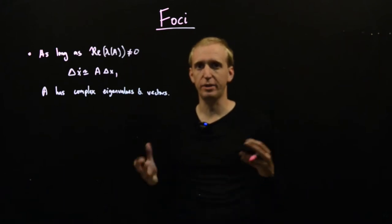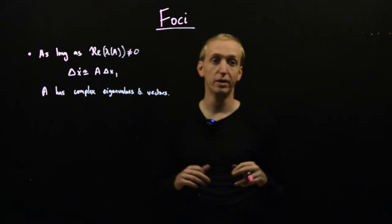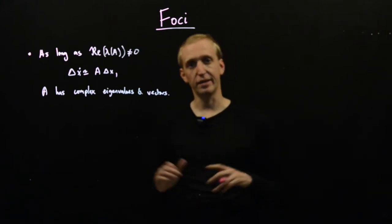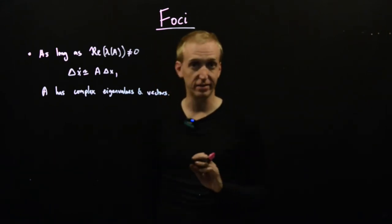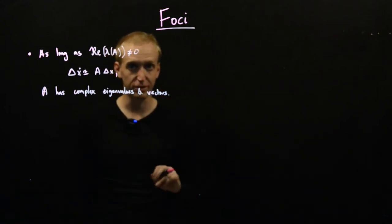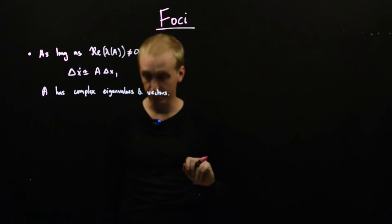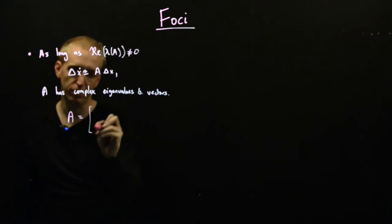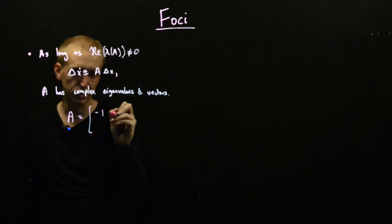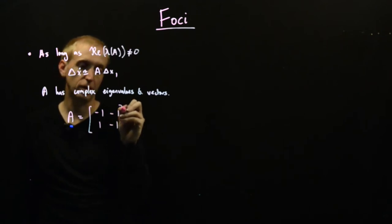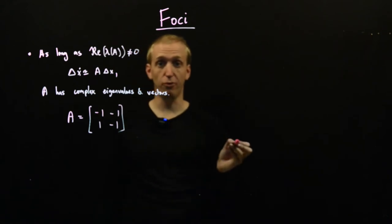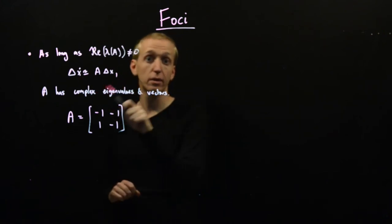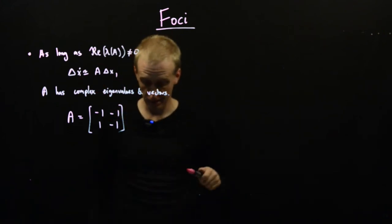It's extremely messy to derive the precise shape of these foci, so instead we're just going to do a simple example and then I'm just going to claim that more general cases will look similar. Let's just look at the special case that the matrix A is given by [-1, -1; 1, -1].